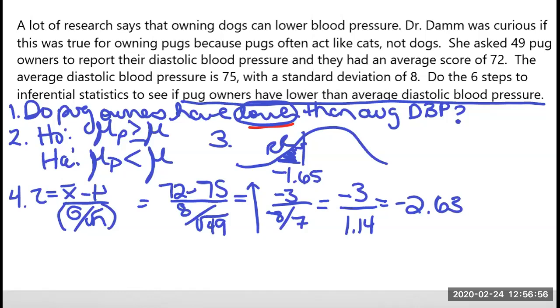So I'm going to go ahead and mark where that negative 2.63 would be. Here's 1.65, so negative 2.63 is going to be over here. And so that's in my rejection region.